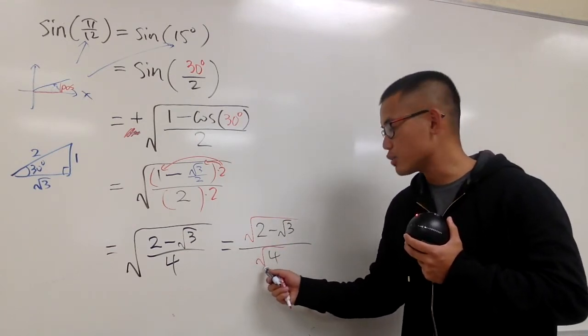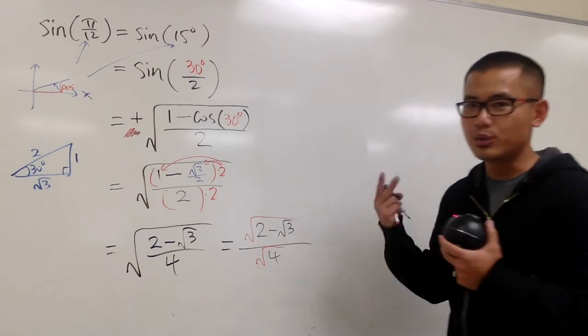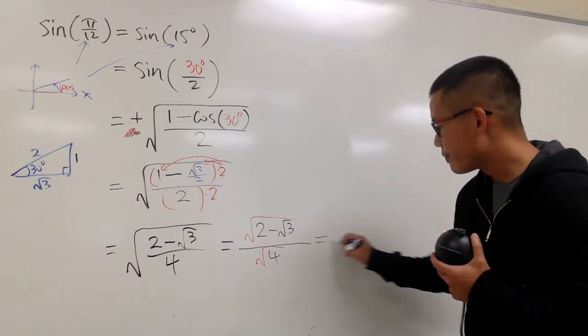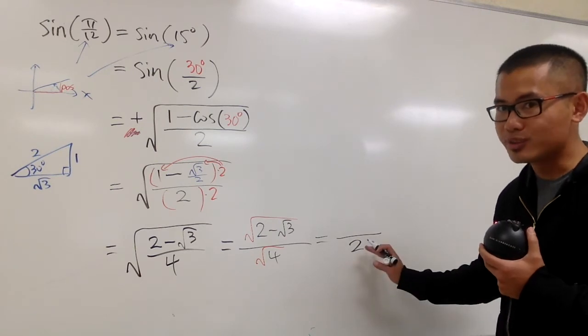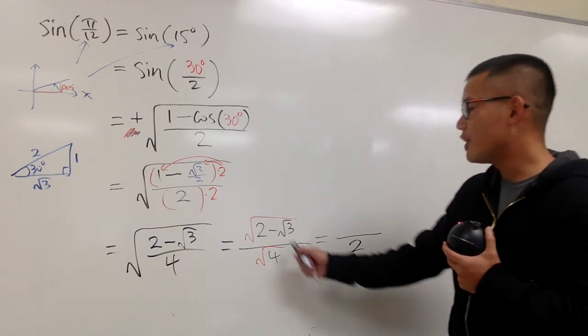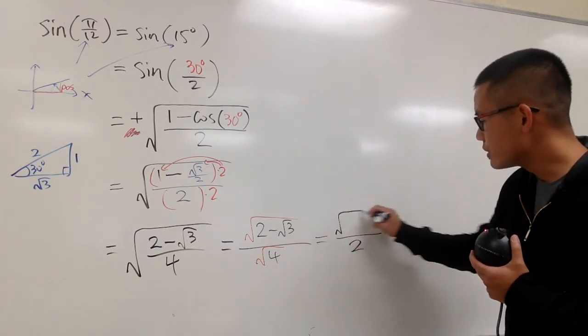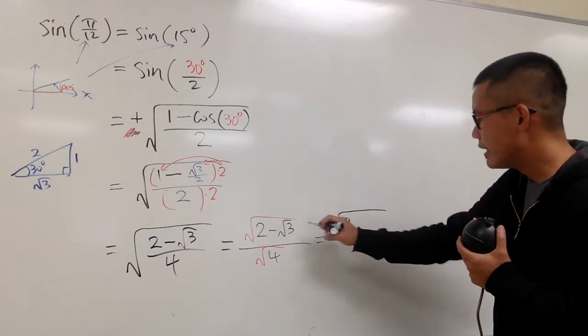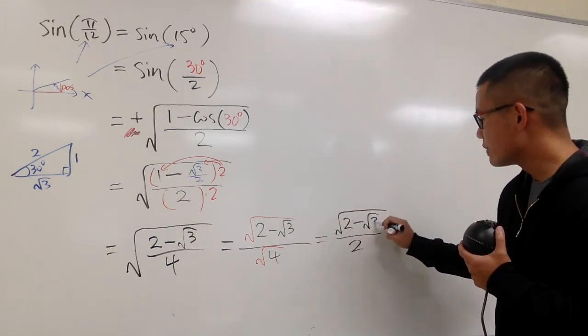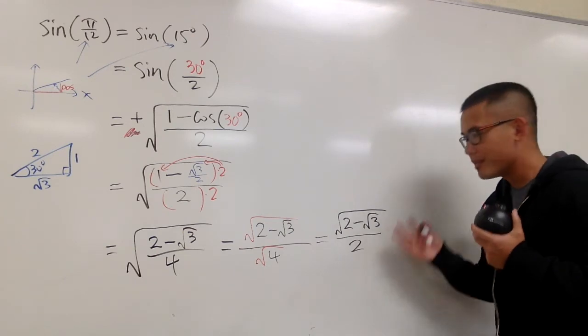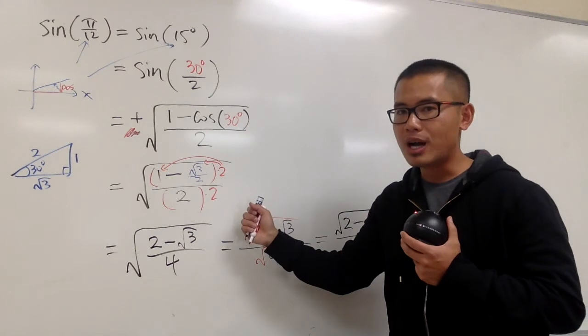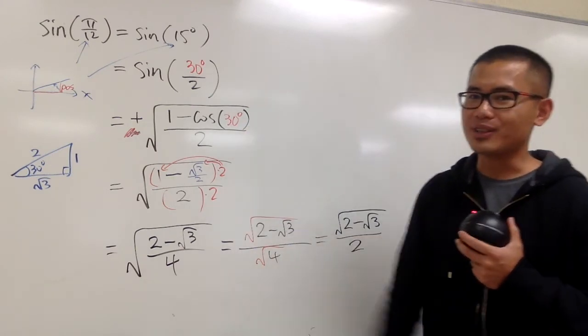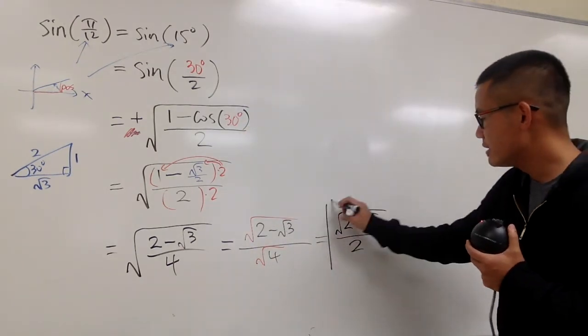And we are lucky, because square root of 4 is a nice number, it's just a regular 2. Therefore, on the bottom, we just have a regular 2, no more square roots on the bottom. However, on the top, we have square root of 2 and then minus square root of 3. So, this will be the result that we'll end up having if you use the half-angle formula for the sine function. And this right here is it.